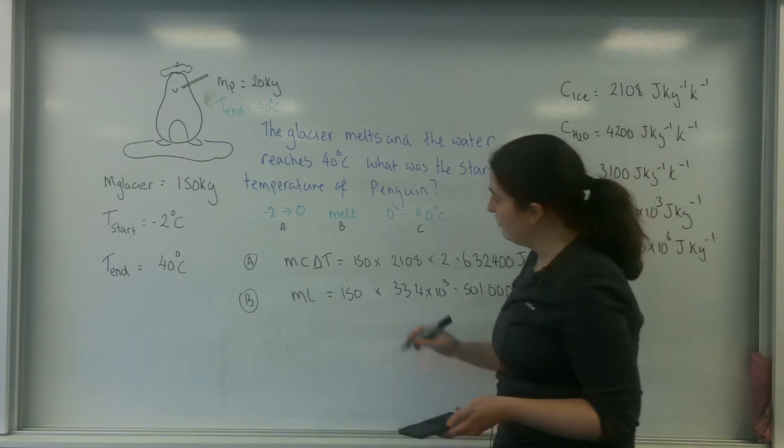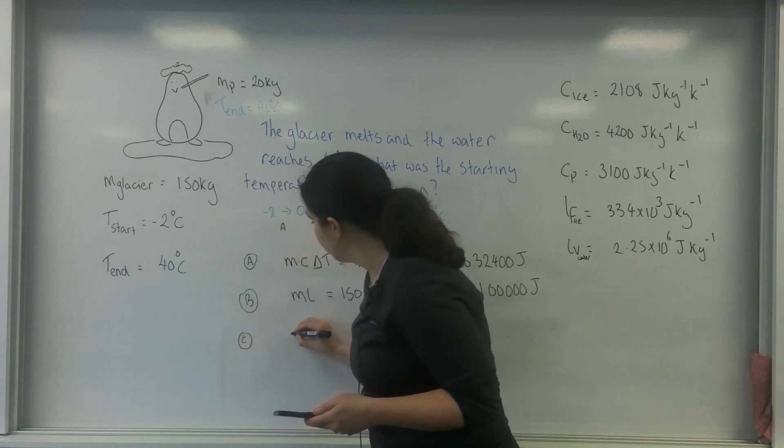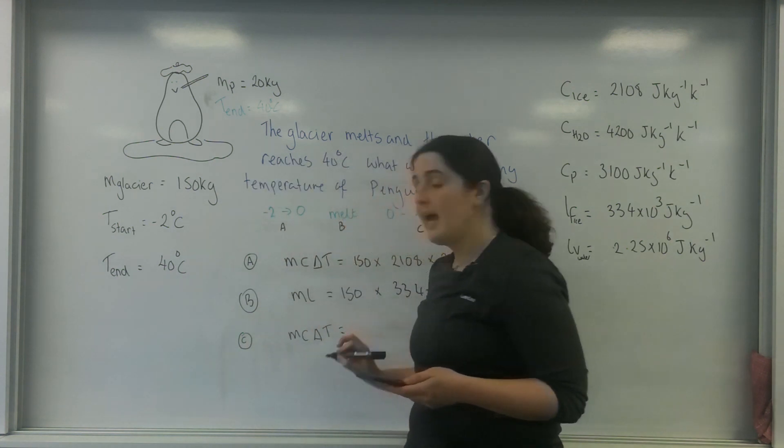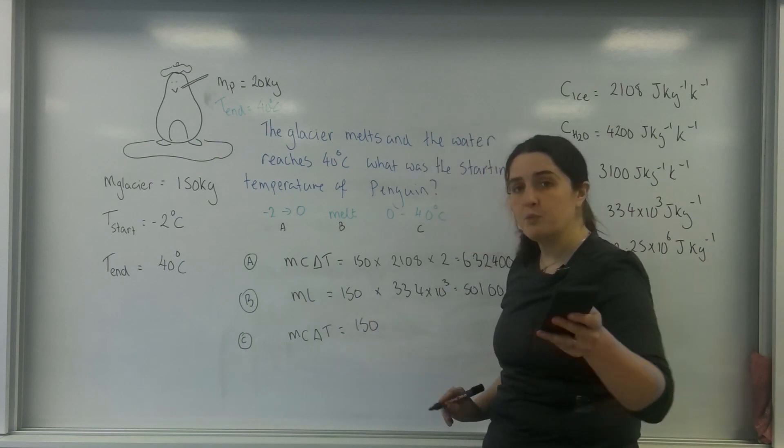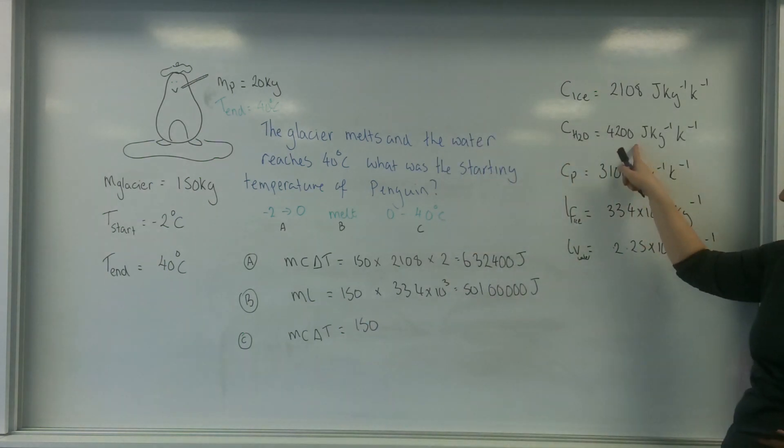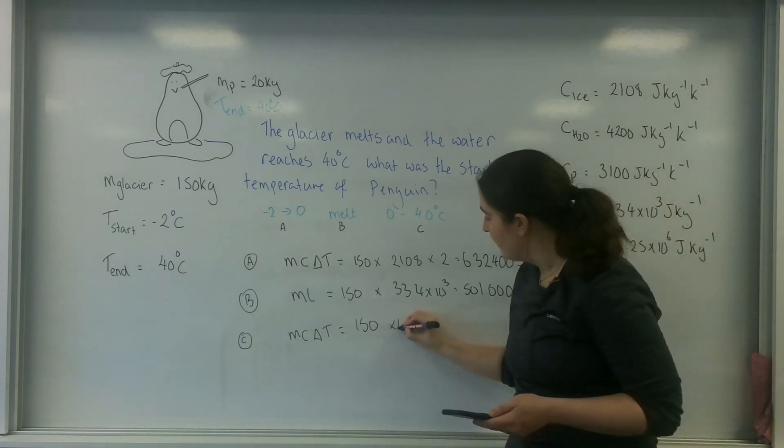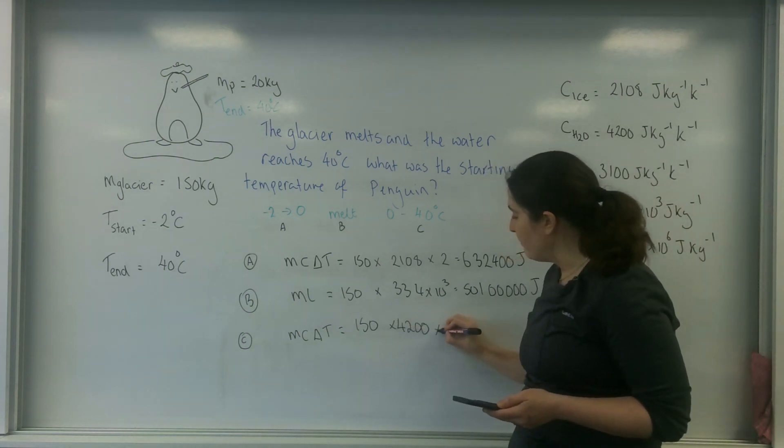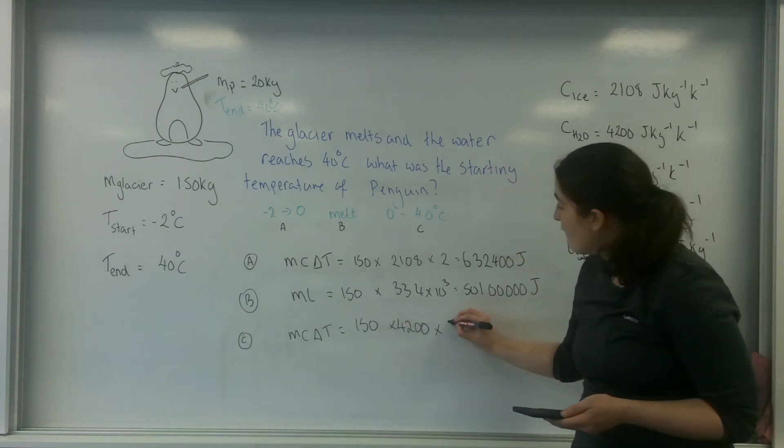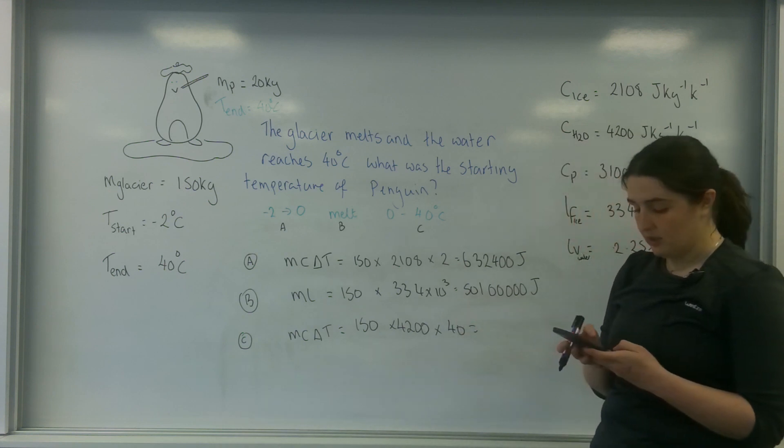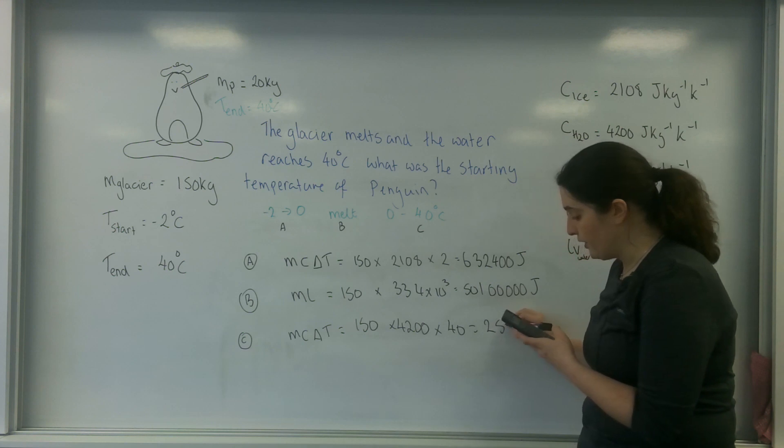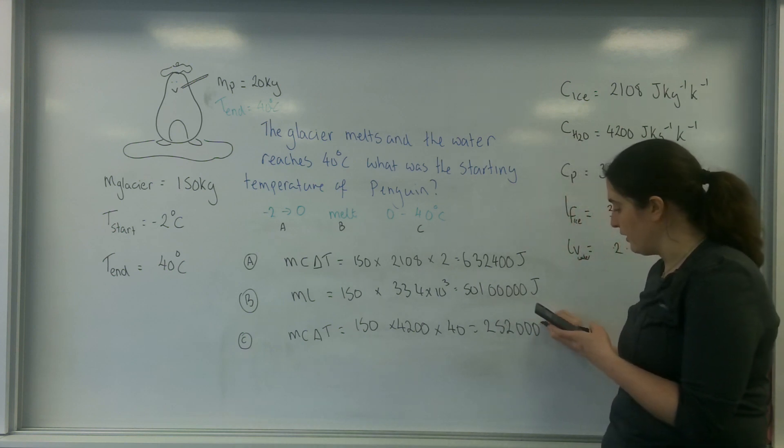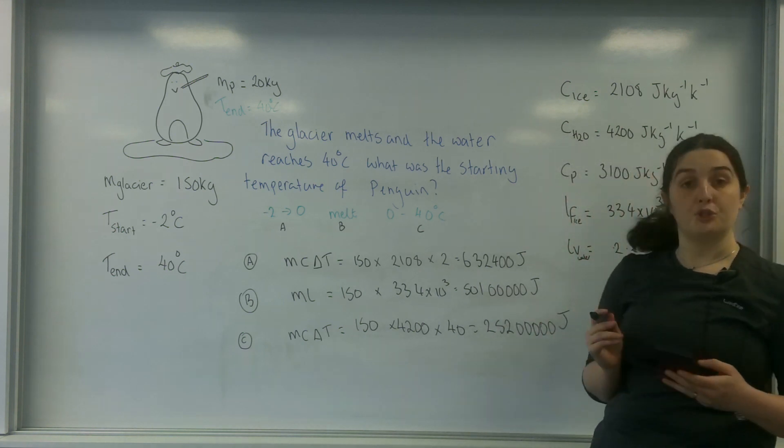I am now going to be a liquid. I'm going to change my temperature, so I'm going to have to use MC delta T again. So that's 150, and this time it's water, so I'm going to use a slightly different specific heat capacity. And my change in temperature is 40 degrees. So 40 times 4200 times 150 is 25,200,000 joules there.